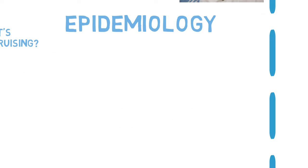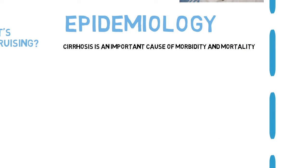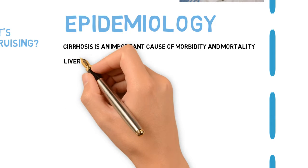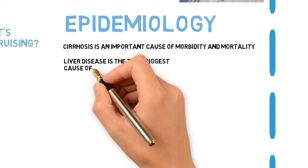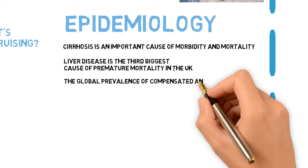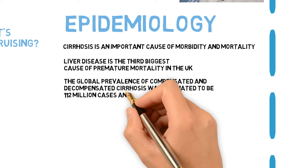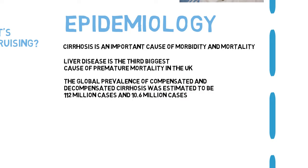Epidemiology. Cirrhosis is an important cause of morbidity and mortality. Hospital admissions related to liver cirrhosis have increased year on year in the US. Liver disease is the third biggest cause of premature mortality in the UK with 62,000 working-life years lost. In 2017, the global prevalence of compensated and decompensated cirrhosis was estimated to be 112 million cases and 10.6 million cases respectively. Cirrhosis caused more than 2.2 million deaths worldwide in 2017.